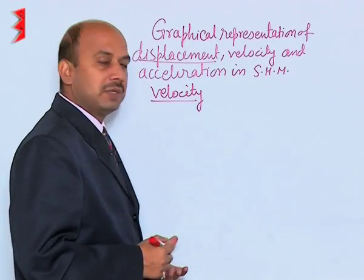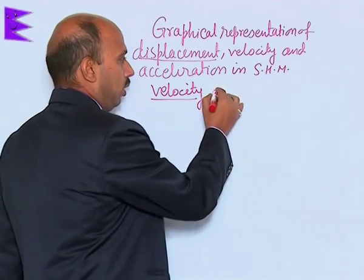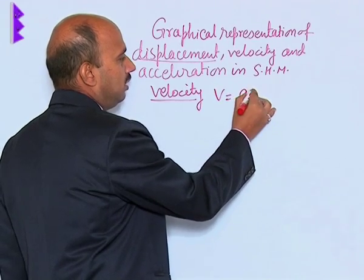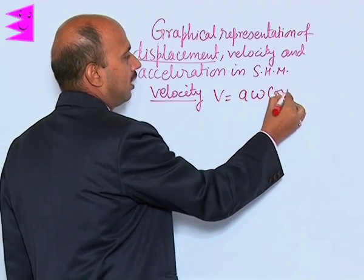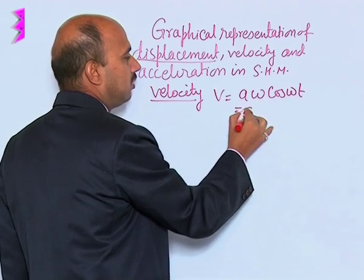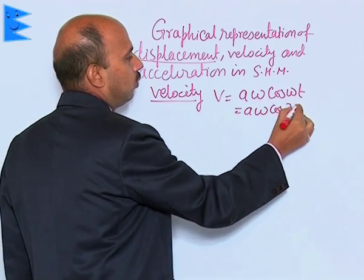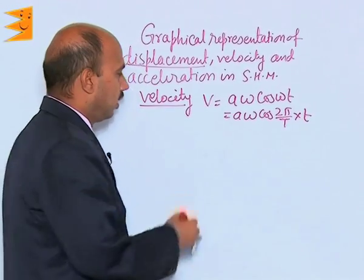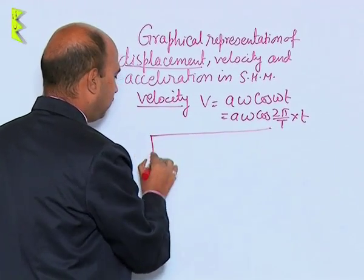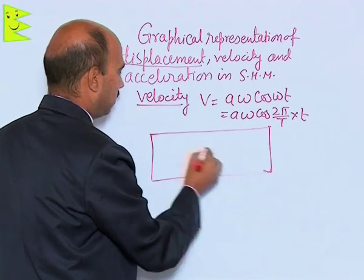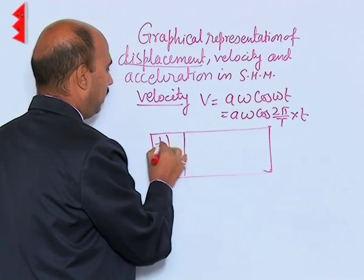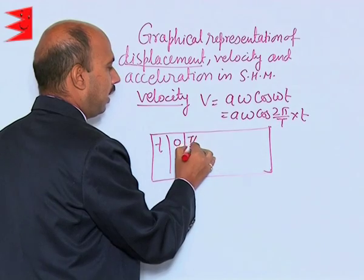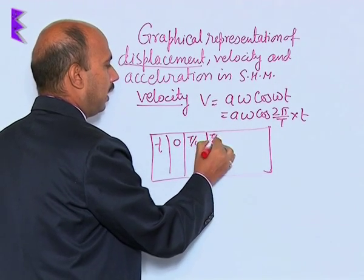Now, see graphical representation for velocity. We know expression for velocity is a omega cos omega t, that is a omega cos 2 pi upon t into t. Again, we make here all these values: t here 0, t by 4, t by 2, 3 t by 4 and here t.